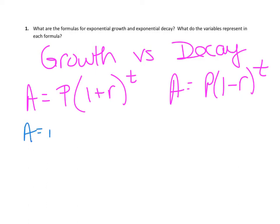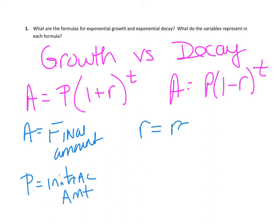So A represents that final amount, P represents the initial amount, R is your rate, and T stands for time. That should all just be a quick review.